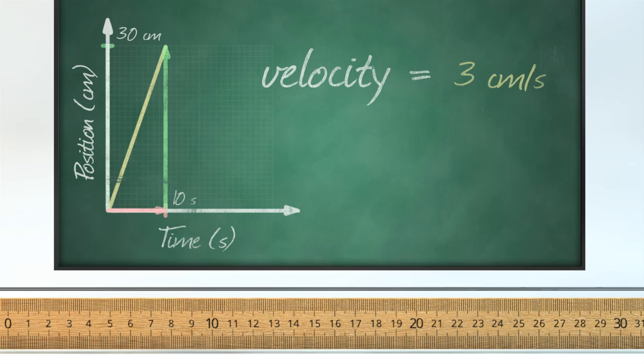We found the velocity just by looking at the slope of the position versus time graph. So why are we allowed to only look at the starting point and ending point and forget about everything in the middle?